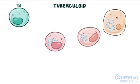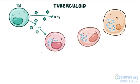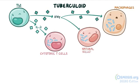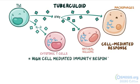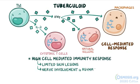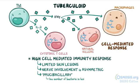In the tuberculoid form, the infection induces a Th1 response, and Th1 cells secrete interleukin-2 and interferon gamma. Interleukin-2 activates cytotoxic T cells, and interferon gamma activates macrophages and natural killers to produce chemicals that destroy ingested bacteria directly, leading to a cell-mediated response. This response is effective in destroying Mycobacterium leprae, so it is sometimes called a high cell-mediated immunity response. Hence, with the tuberculoid form, there's a limited number of skin lesions, and nerve involvement is usually asymmetric. This form is also called paucibacillary leprosy, because of the low number of bacteria in the skin lesions.